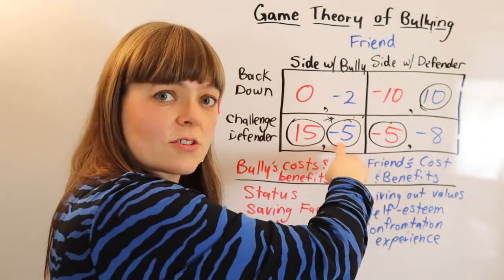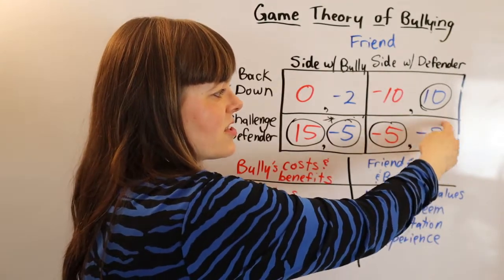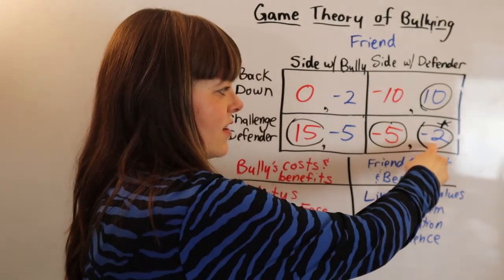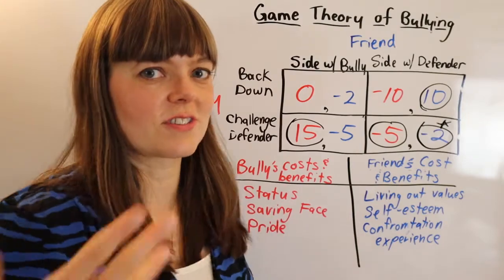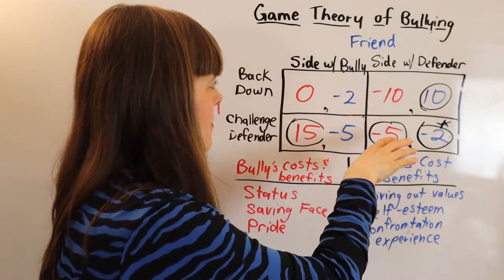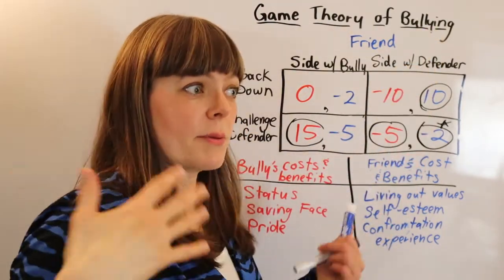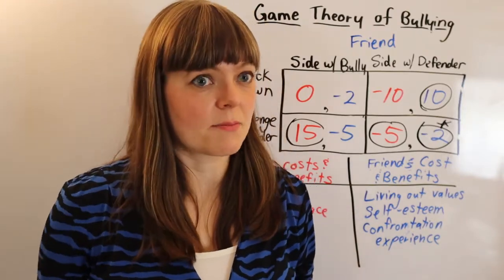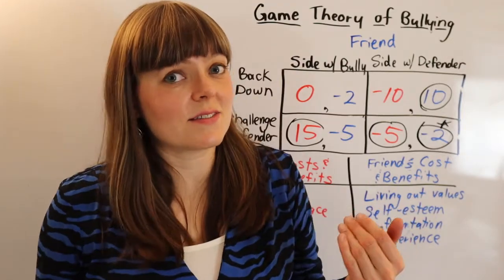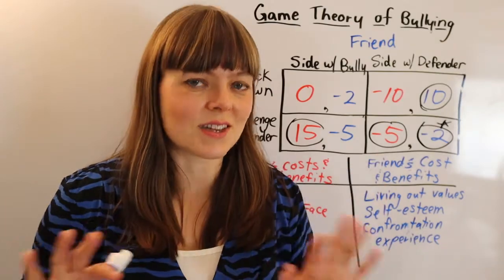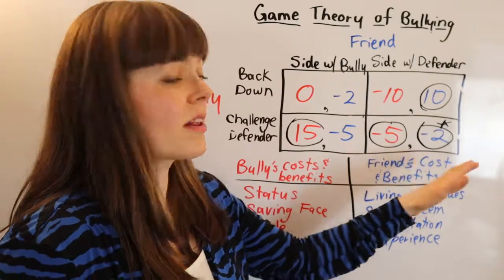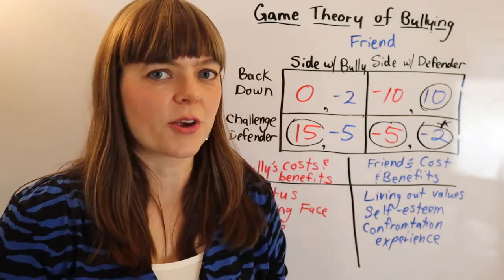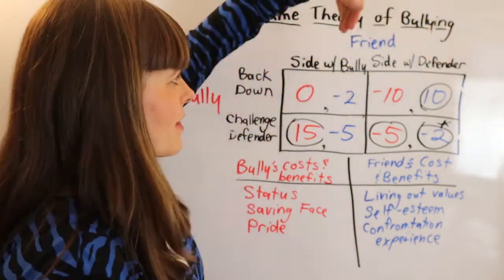All we need is for that utility to be higher than the utility of siding with the bully, and the Nash equilibrium changes. By changing just this one utility so it's not as bad to side with the defender when the bully challenges — because you're less afraid of confrontation — we totally change the equilibrium, and people in this friend group will generally side with the defender. Instead of reducing fear of confrontation, you could also increase the salience of living out one's values, raising utilities in the defender column and lowering them in the bully column. Since the bully has a dominant strategy to challenge, we need friends willing to stick with the defender even when challenged.